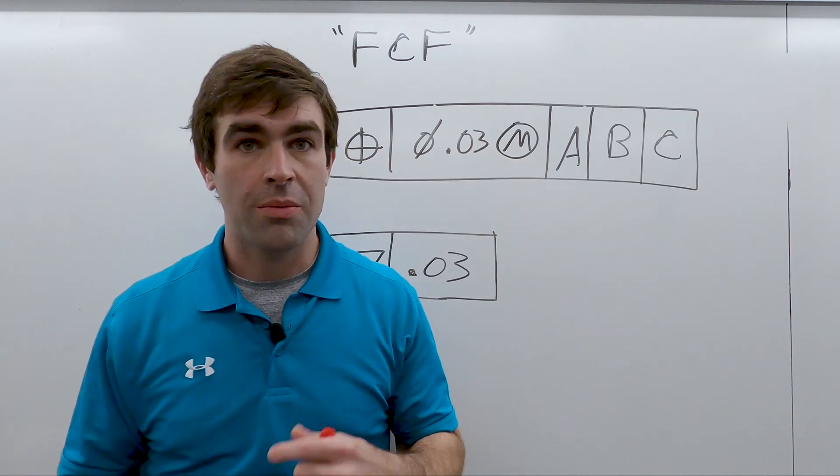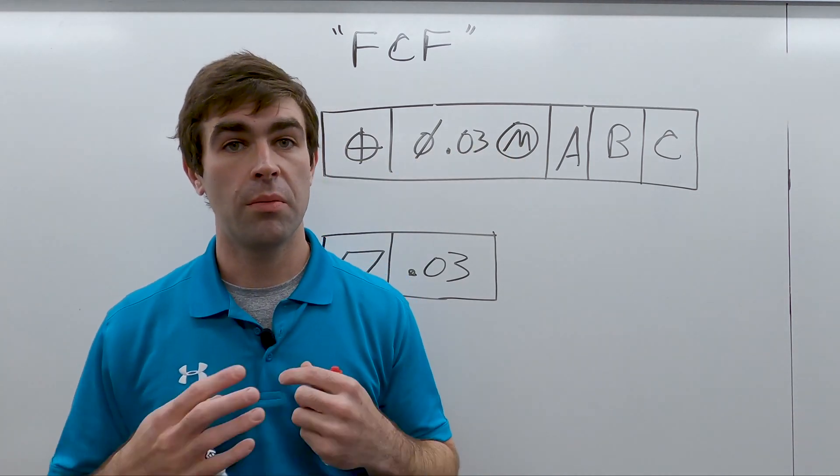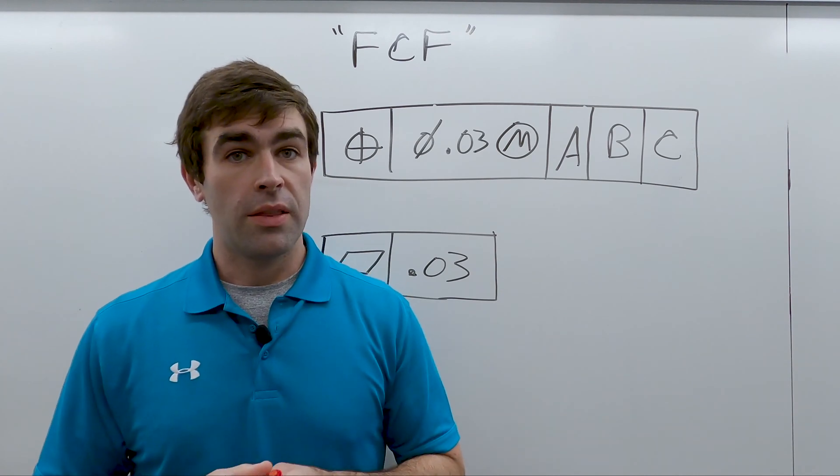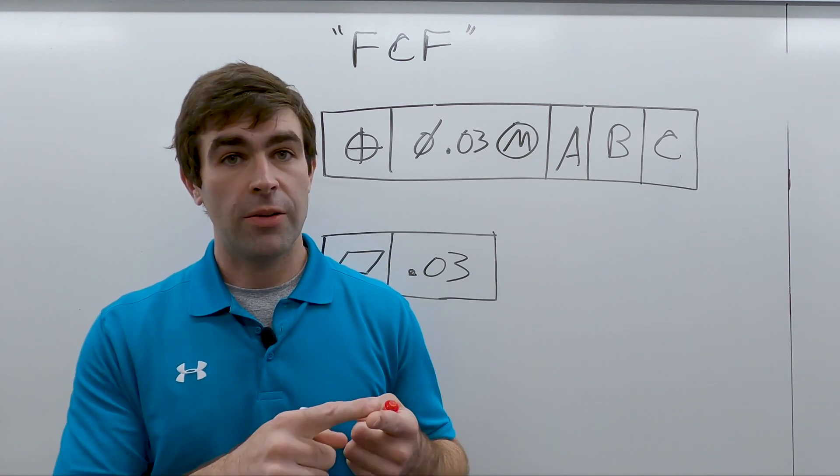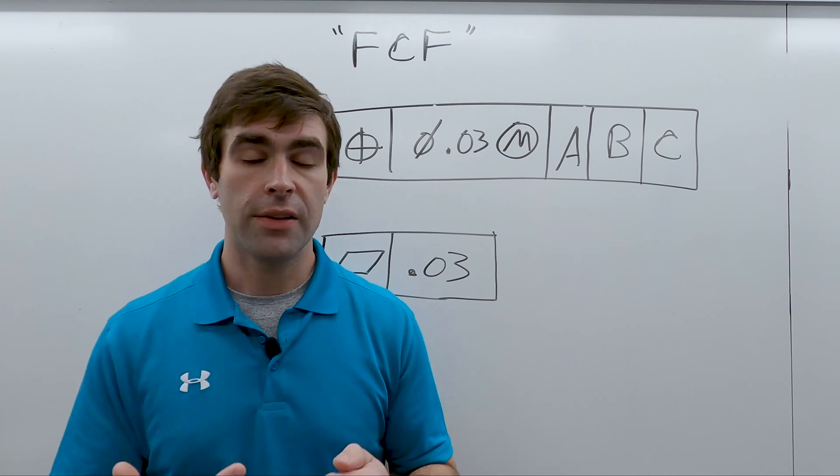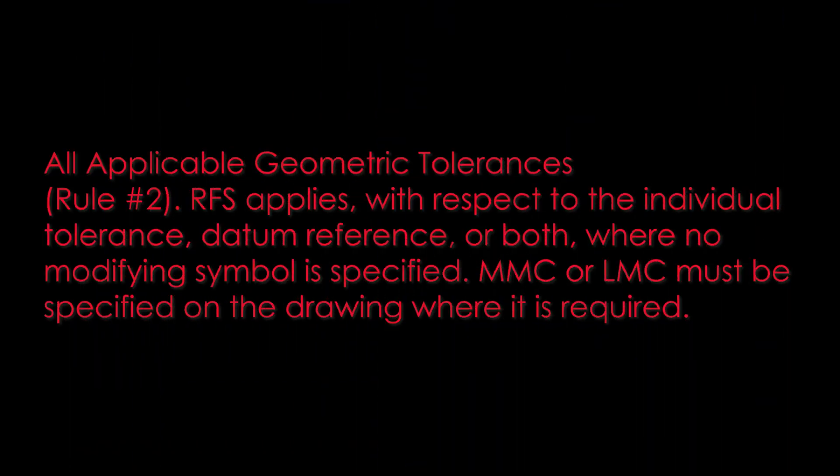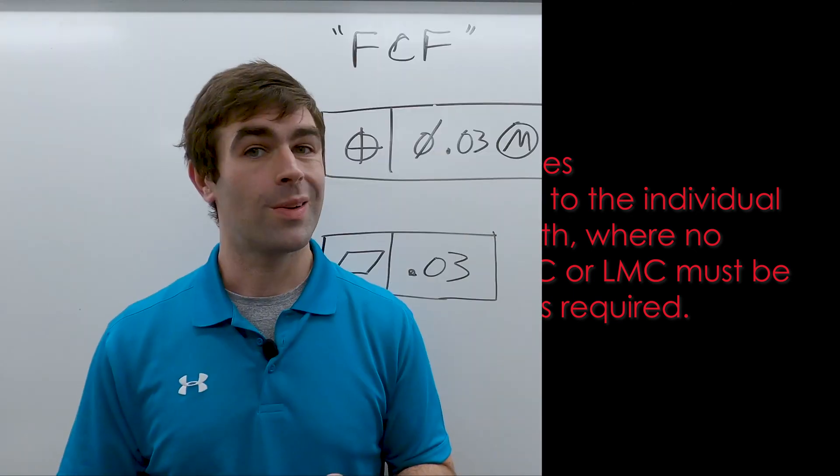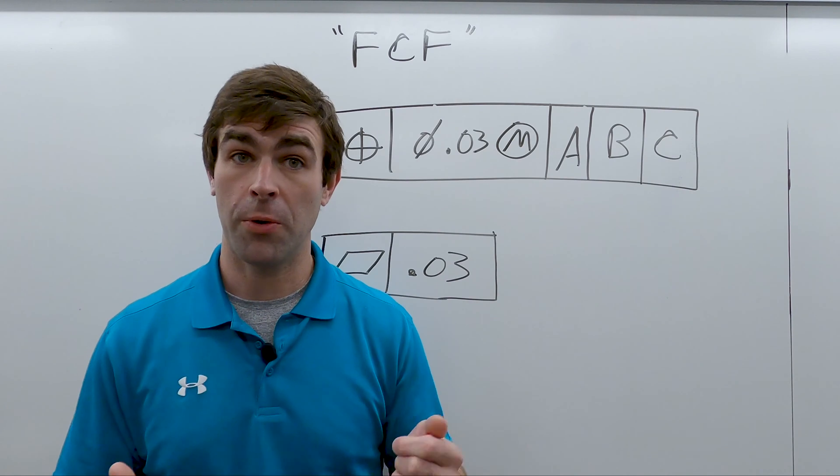The next area is our material condition modifier. So it can be three things: MMC, LMC, or regardless of feature size. This leads us to rule number two, which is a lot easier to remember than rule number one.